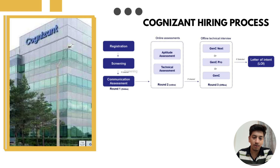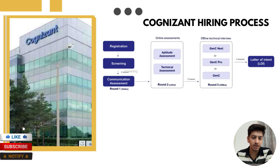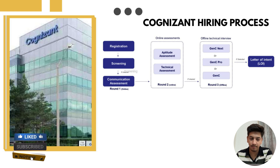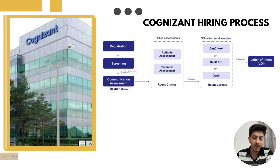Round two is the aptitude and technical assessment. This round is conducted online via the Superset portal and is divided into two parts. The first part is the aptitude test, which covers logical reasoning, quantitative aptitude, and basic problem solving.